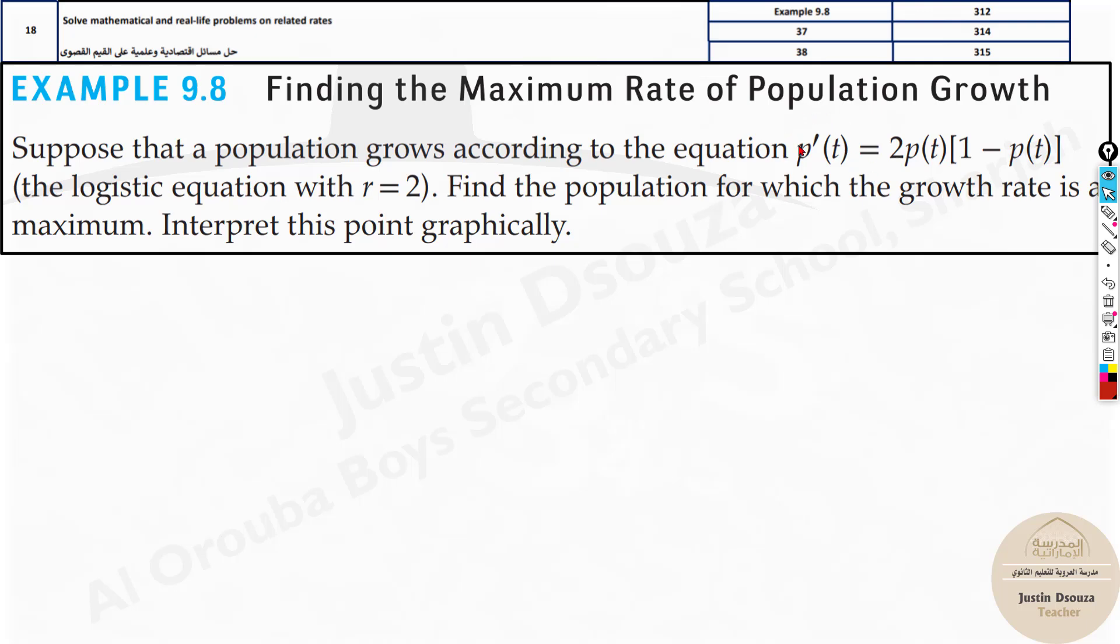Otherwise, we know the rate of population, population growth rate is given like this. Now find the population for which the growth rate is maximum and interpret it graphically.